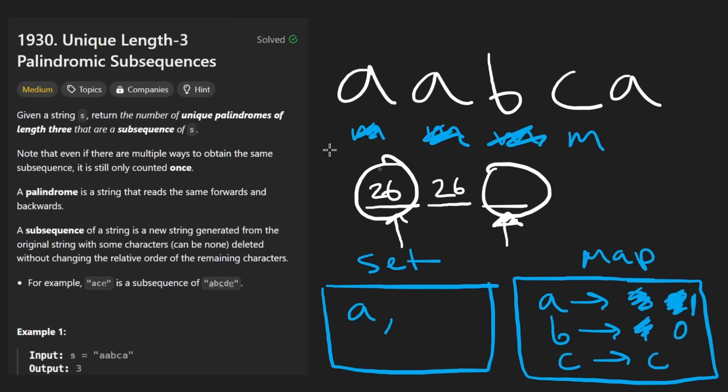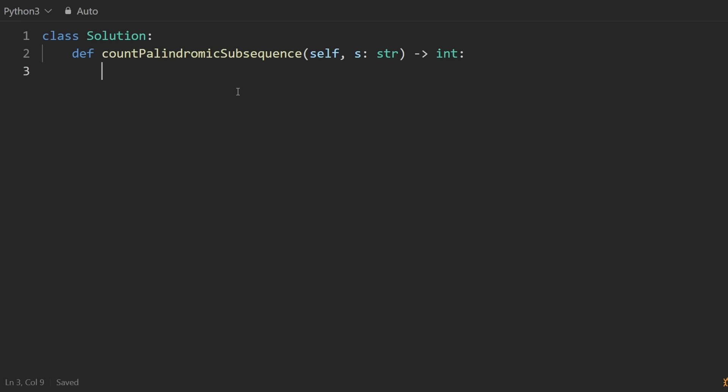So it's actually 26 squared different unique palindromes we could have that are of length three, given that our character set is lowercase a through z. Okay, now let's code it up. And I realize this explanation has actually gone longer than I expected, mostly because of the dry run. I probably didn't need to do that.